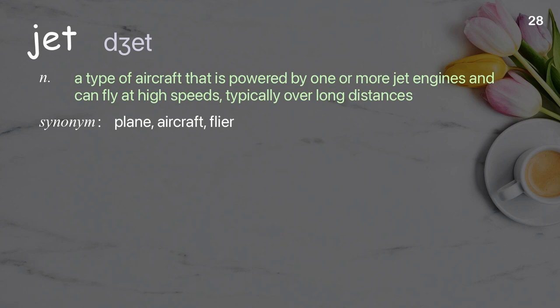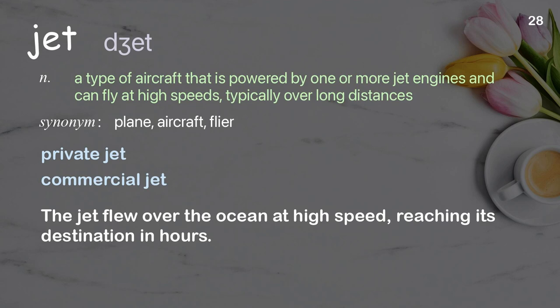Jet: A type of aircraft powered by one or more jet engines that can fly at high speeds, typically over long distances. Examples: Private jet, Commercial jet. The jet flew over the ocean at high speed, reaching its destination in hours.